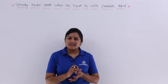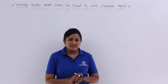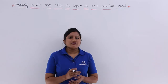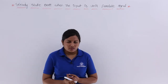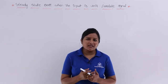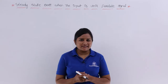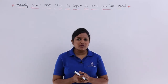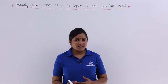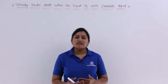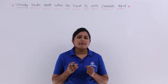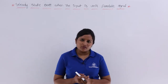In this video, we will derive the steady state error in case the input is a unit parabola. Up to now, in the previous two videos, we derived the steady state error for unit step input and ramp input. In this class, we are going to derive the steady state error for unit parabolic input.